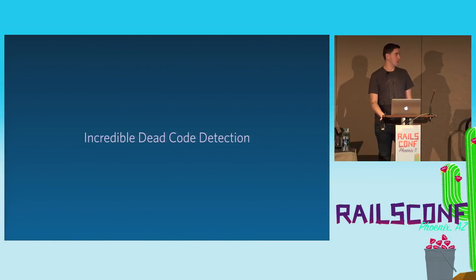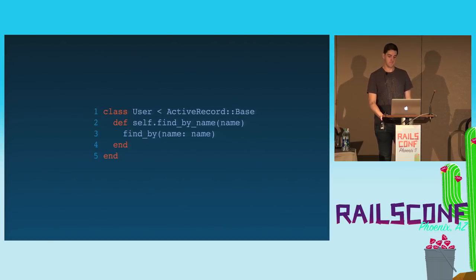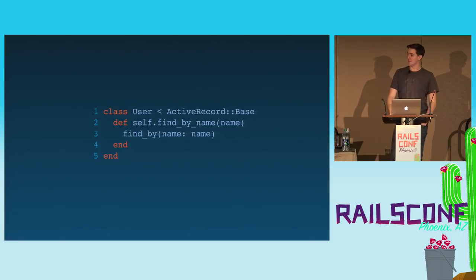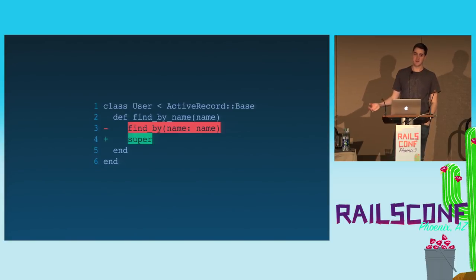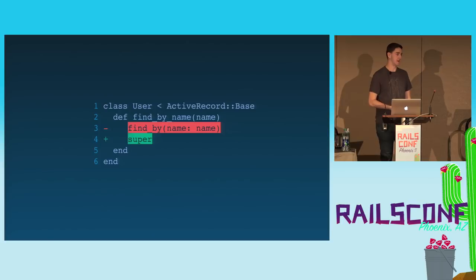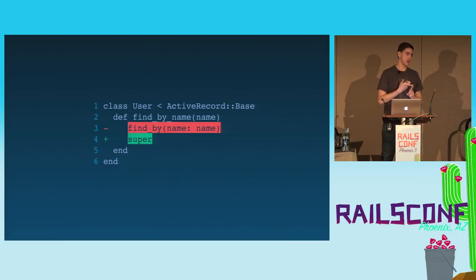Mutation testing is also a great tool for detecting dead code. Consider this example — maybe I'm new to Rails and I don't know that ActiveRecord will do this for me if I have a column called name. Even if I don't know this, if I run the mutation testing tool on it, it's going to show me that I can replace the method body with super. What it's saying is the entire implementation of this method is already covered by the parent class. So as a new Rails user, I didn't have to read any documentation or talk to coworkers to discover I'm introducing a redundant method.